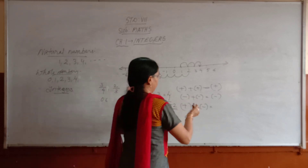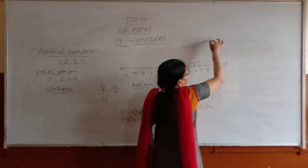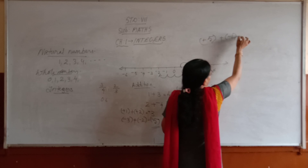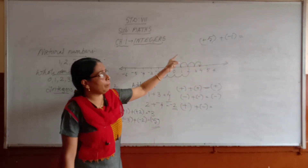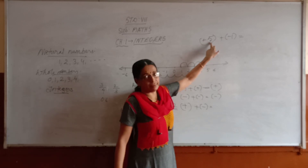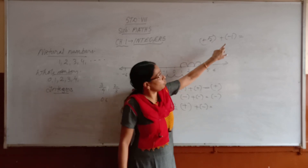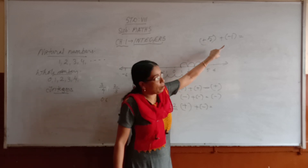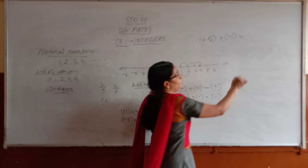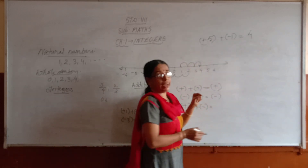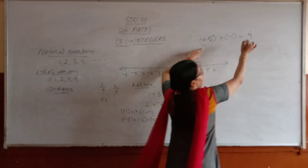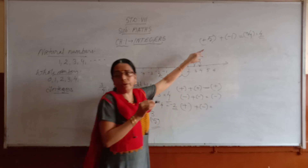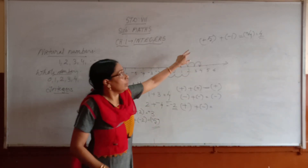For example: plus 5 plus minus 1. Both have different signs. Without considering the sign, the smaller number is 1, the bigger is 5. 5 minus 1 equals 4. The sign of the bigger number is positive. So the answer is plus 4.